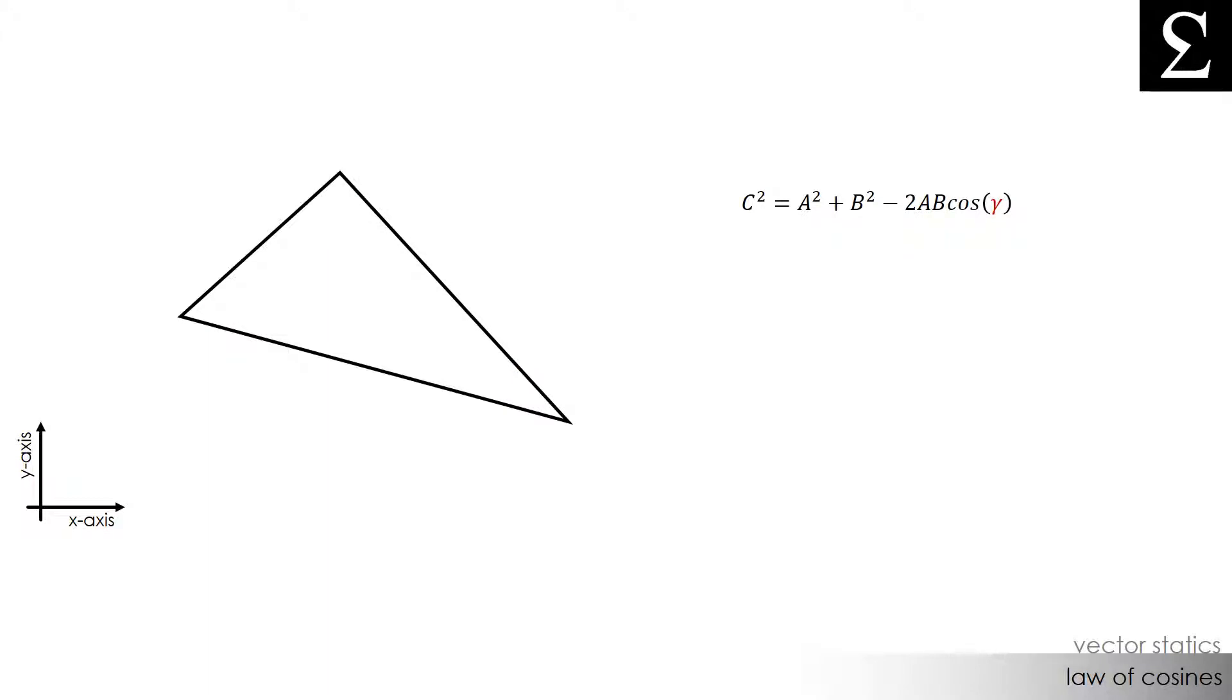So let's do a quick little example to illustrate the law of cosines. If we had this triangle here and we knew that side a was 6 units long and side b was 7 units long and also that the angle gamma was 100 degrees, what would the length of side c be?